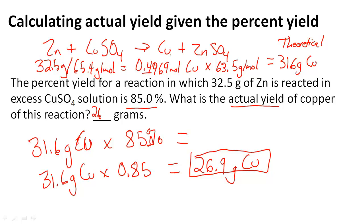We first had to write the balanced equation. We knew what the limiting reactant was because there was excess CuSO4. We then found the theoretical yield and multiplied it by the percent yield to get the actual yield.